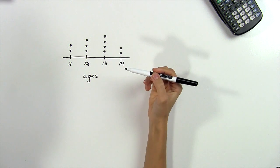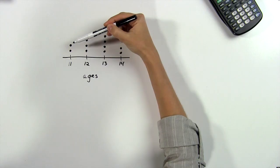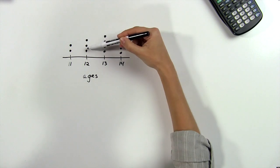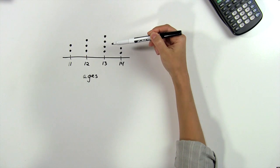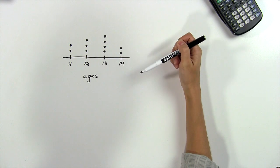What this graph tells us is that there are two girls that are 11 years old, because there's two dots here, three girls that are 12 years old, four girls that are 13 years old, and two girls that are 14 years old.